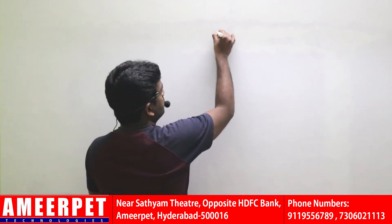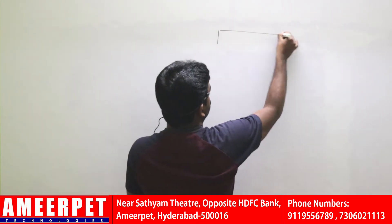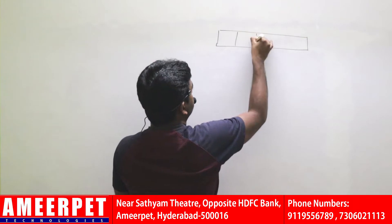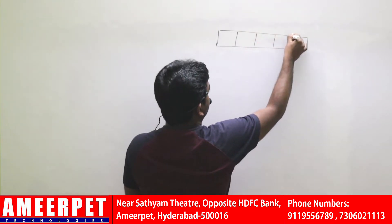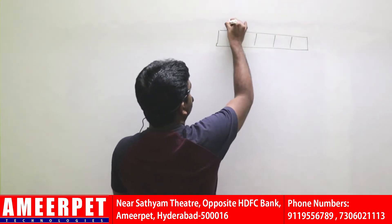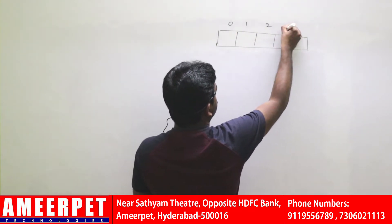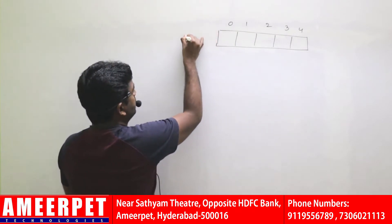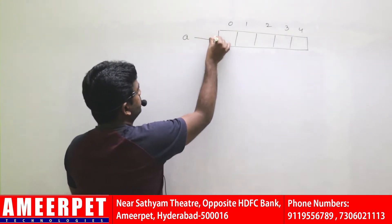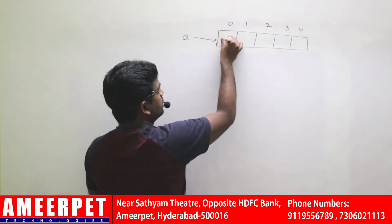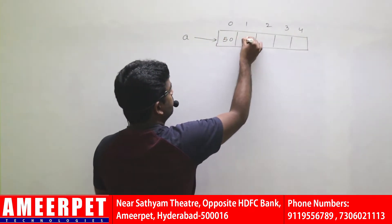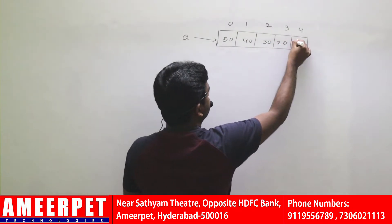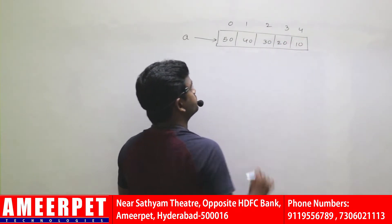Suppose I am taking one array. In this array, total five elements are present. Array name A is pointing to this location. And the values we are taking: 50, 40, 30, 20, 10.